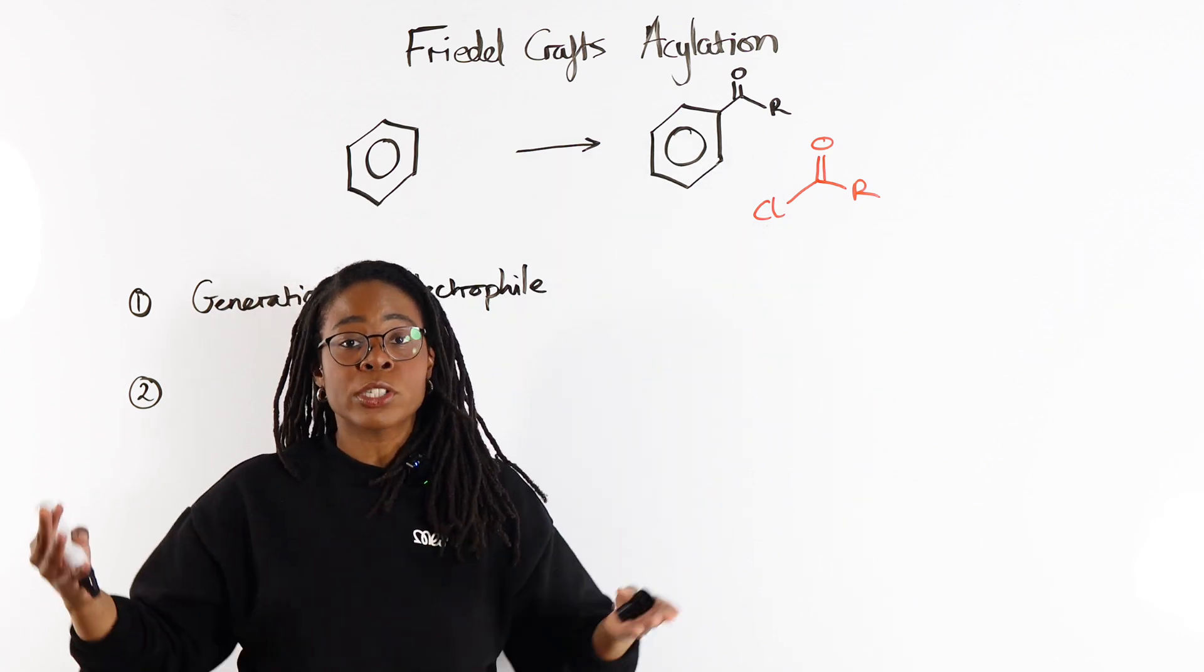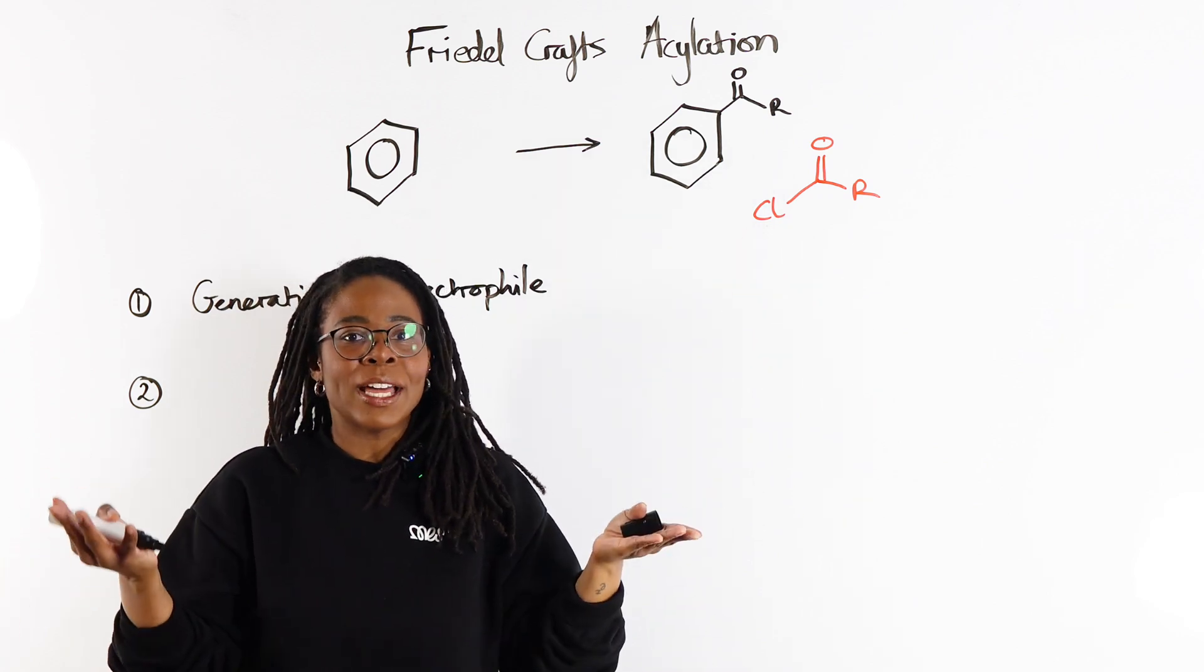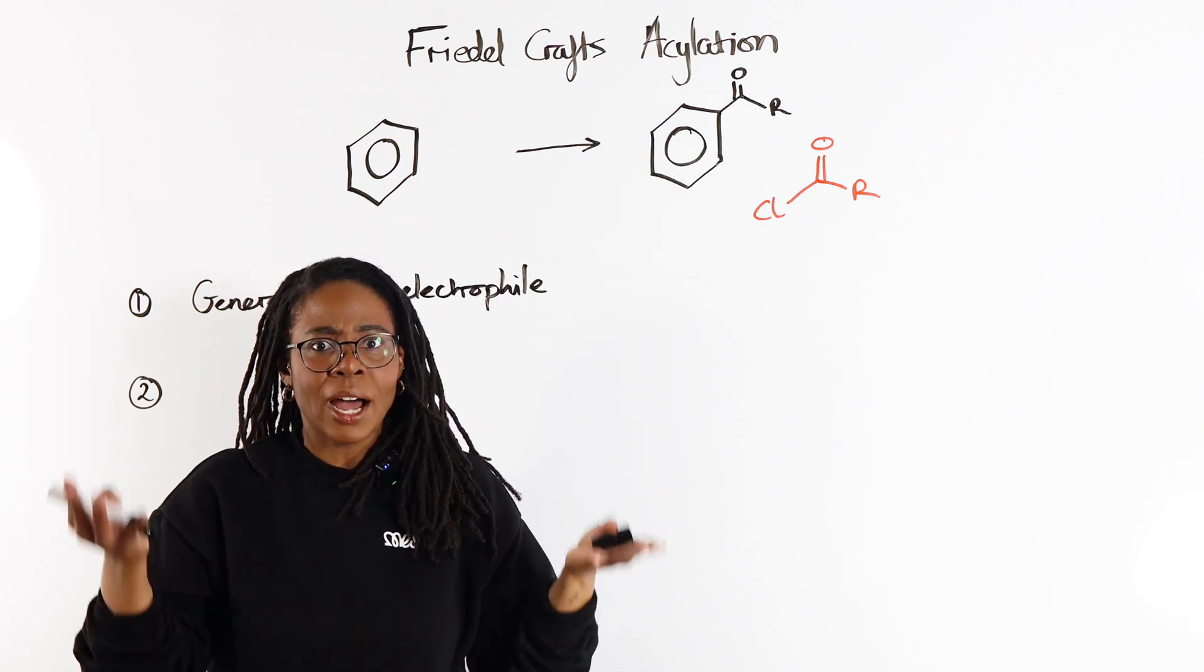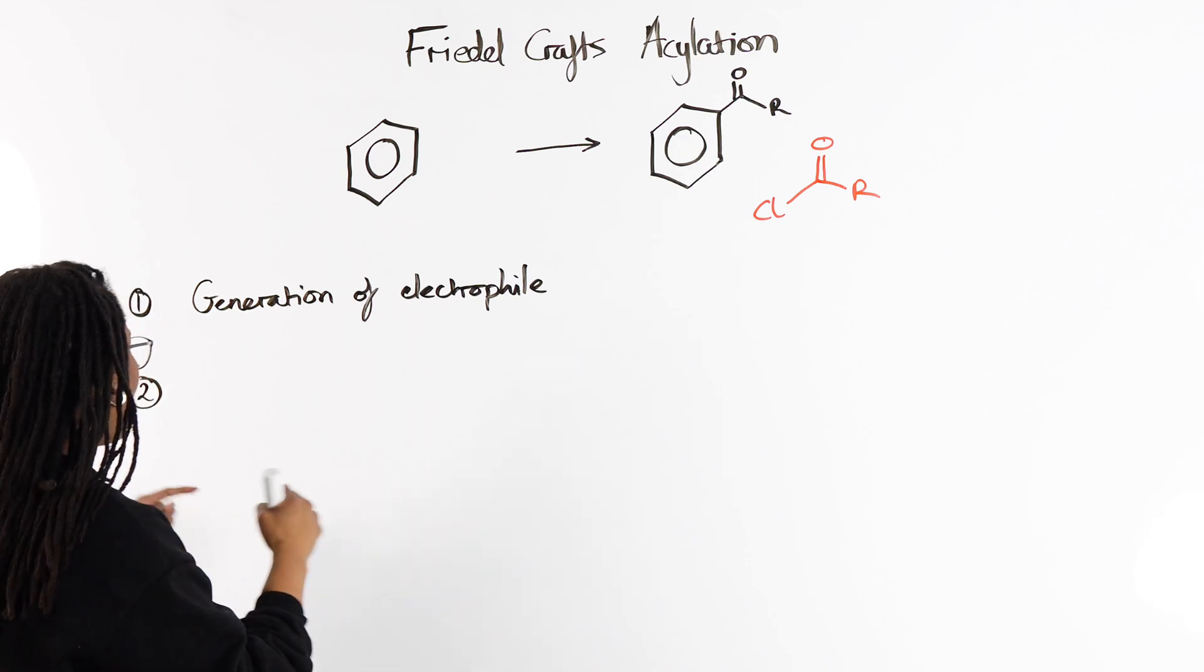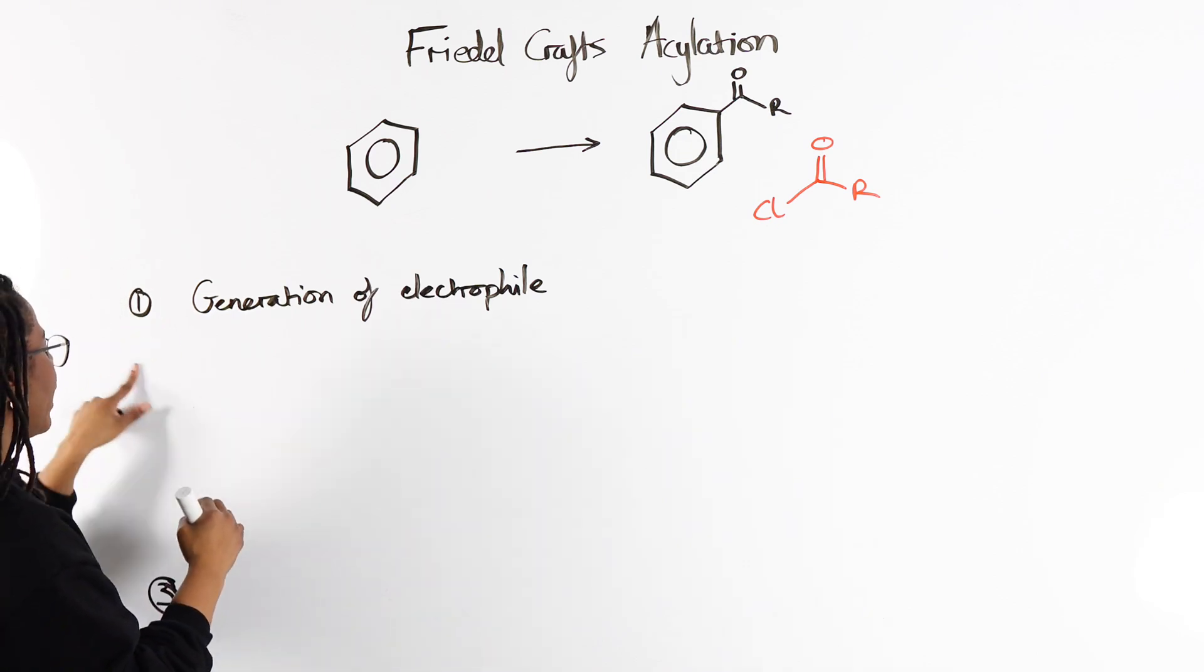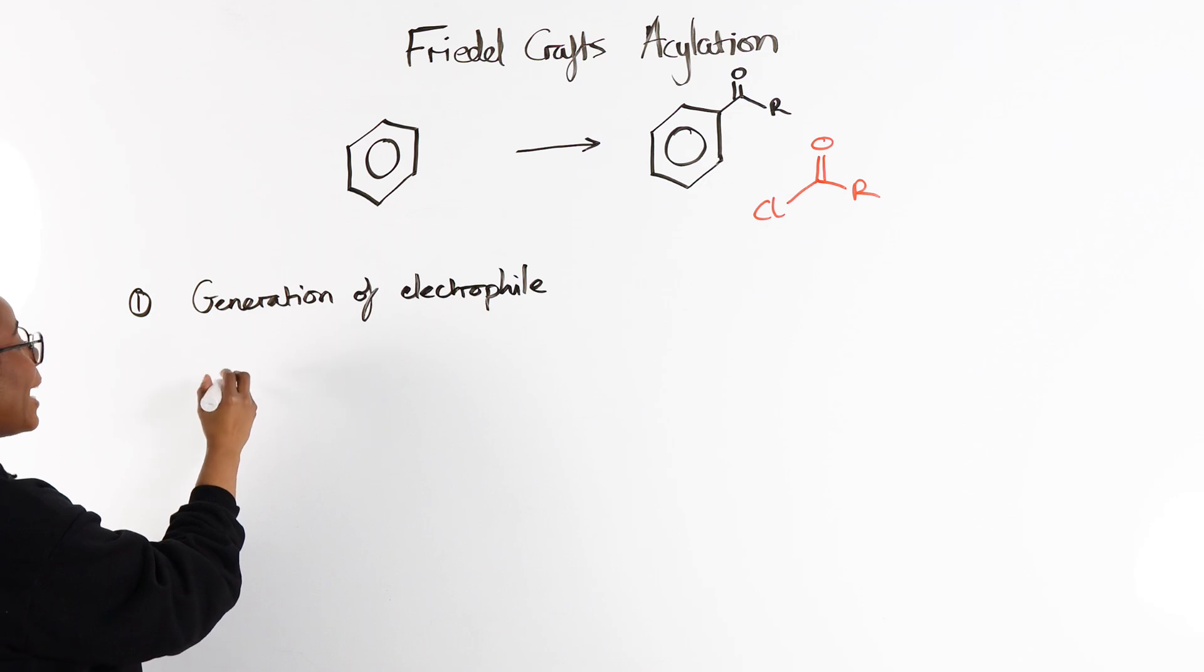we need to actually generate a positively charged electrophile so that the charge density is high enough for these two to actually attract each other. So we start with our acyl chloride.